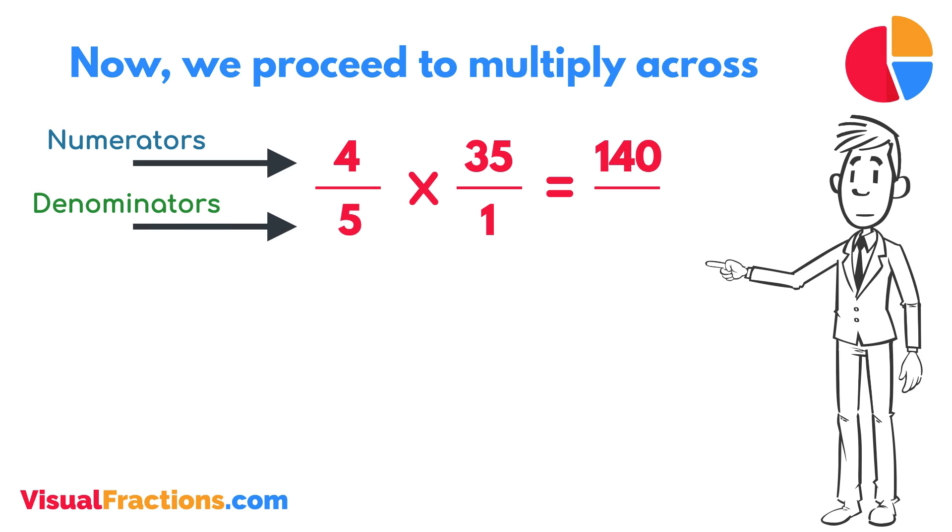Next, multiply the denominators, 1 times 5 equals 5. We now have a new fraction, 140 fifths.